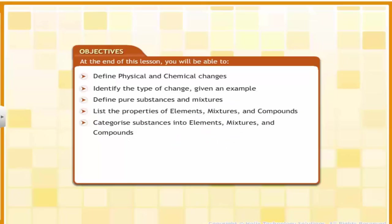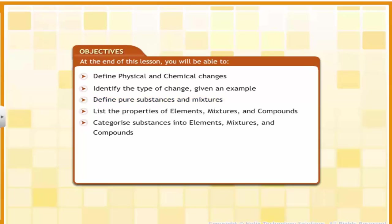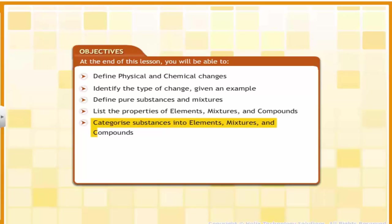In this lesson, you will learn about elements, mixtures, and compounds. At the end of this lesson, you will be able to define physical and chemical changes, identify the types of change given an example, define pure substances and mixtures, list the properties of elements, mixtures, and compounds, and categorize substances into elements, mixtures, and compounds.